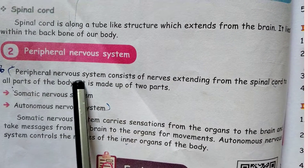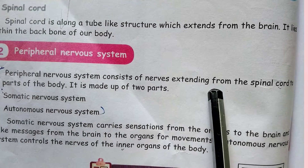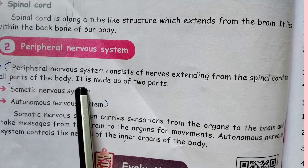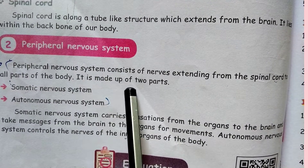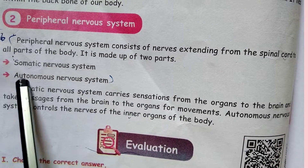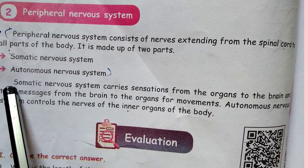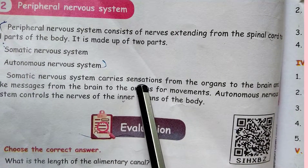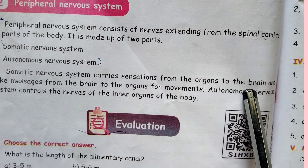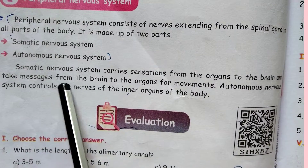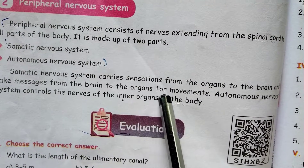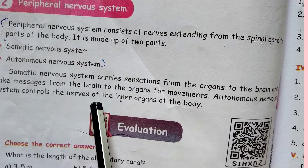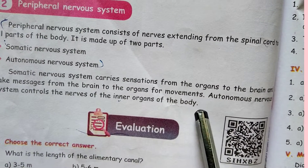Peripheral nerve system consists of the nerves extending from the spinal cord to all parts of the body. It is made up of two parts: somatic nerve system and autonomic nerve system. The somatic nerve system carries sensations from the organs to the brain and takes the message from the brain to the organs of movement. The autonomic nerve system controls the nerves of the inner organs of the body.